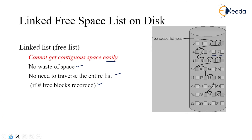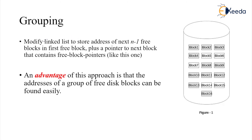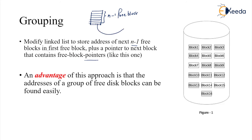We can modify the linked list to store the address of the next n minus 1 free blocks in the first free block, plus a pointer to the next block containing the free block pointers. So we can group them — the first free block will contain the addresses of n minus 1 free blocks, and a pointer to the next block that in turn contains more free block pointers.